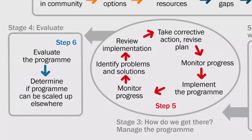Stages three and four of planning are about ensuring we can carry out the plan effectively. This is the implementation phase, and planning activities here are referred to as monitoring and evaluation. In step five, we carry out several activities, often more than once: we monitor progress of implementation, identify problems and solutions, review implementation, and if corrective action is needed, we revise the plan. In step six, we evaluate the program of work that resulted from our plan and decide if the plan could be scaled up elsewhere.